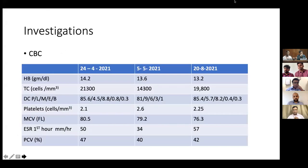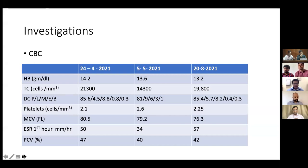This is the CBC of the patient, sequenced left to right: first admission, discharge, and second admission. During the first admission, there was a significant neutrophilic predominant leukocytosis and PCV was high at 47. During the course of hospital stay, leukocytosis came down and PCV improved. During the second admission, the patient again had increased total counts with similar neutrophilic leukocytosis. Total counts in acute pancreatitis can rise either due to SIRS or due to infection. In the first 24-48 hours, we attribute it to the SIRS component. If total counts persist even after five days, we think of an infection process.